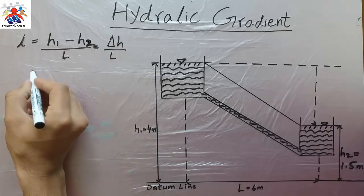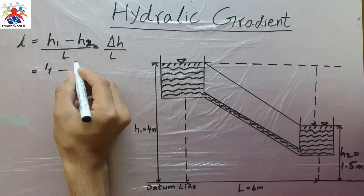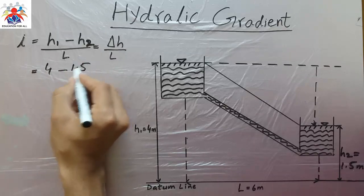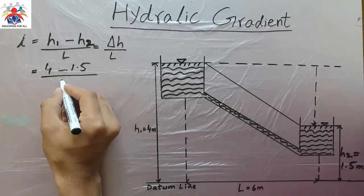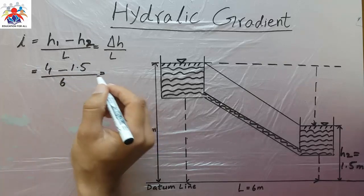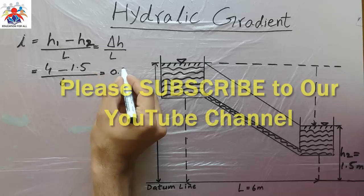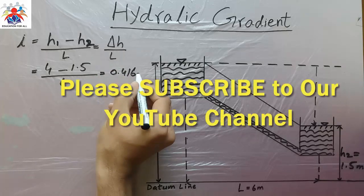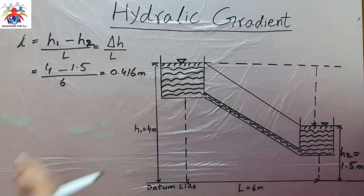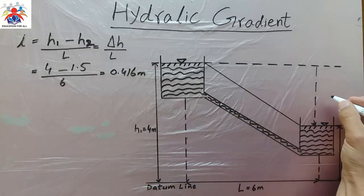h1 we have 4 meters minus h2 we have 1.5 meters divided by length we have 6 meters, so we will get 0.416 meter. The height difference 4 minus 1.5 will get 2.5, which is delta h equals 2.5 meters.